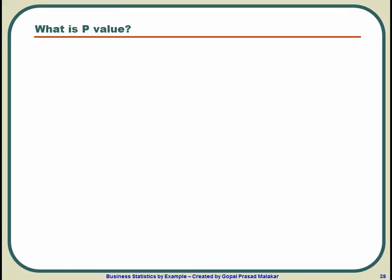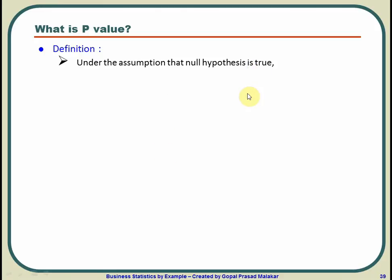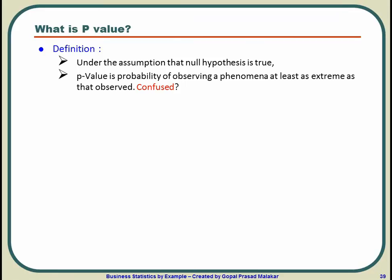Let me first start with p-value and give you a formal definition. It says: under the assumption that null hypothesis is true, it is the probability of observing a phenomenon at least as extreme as that observed. We are just going to understand this by an example, so just hold on.